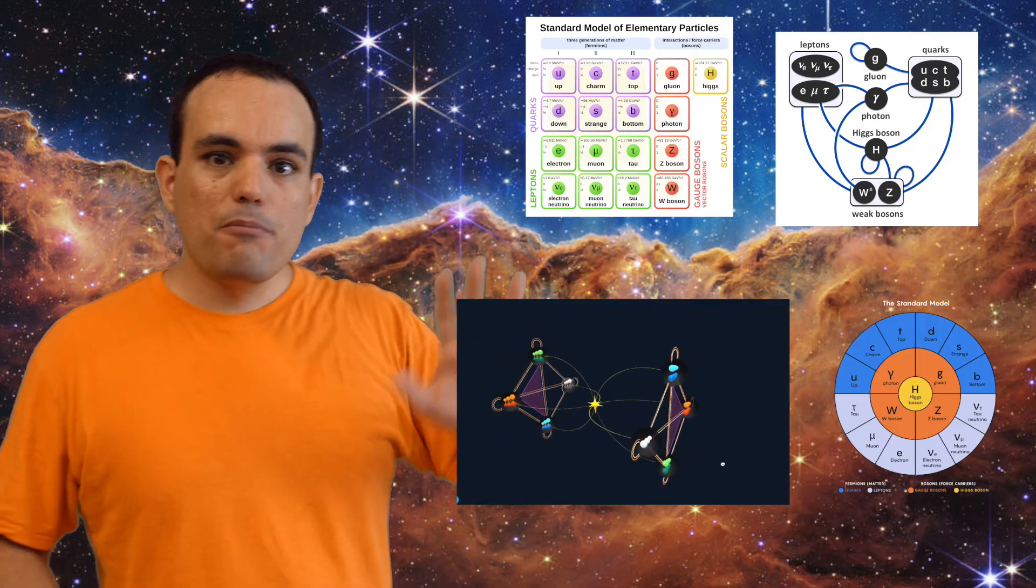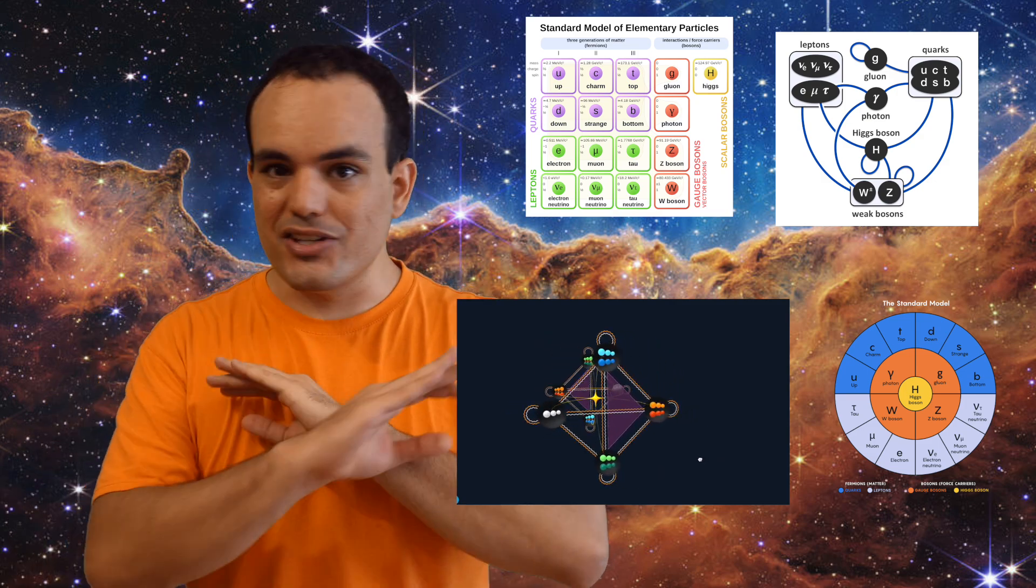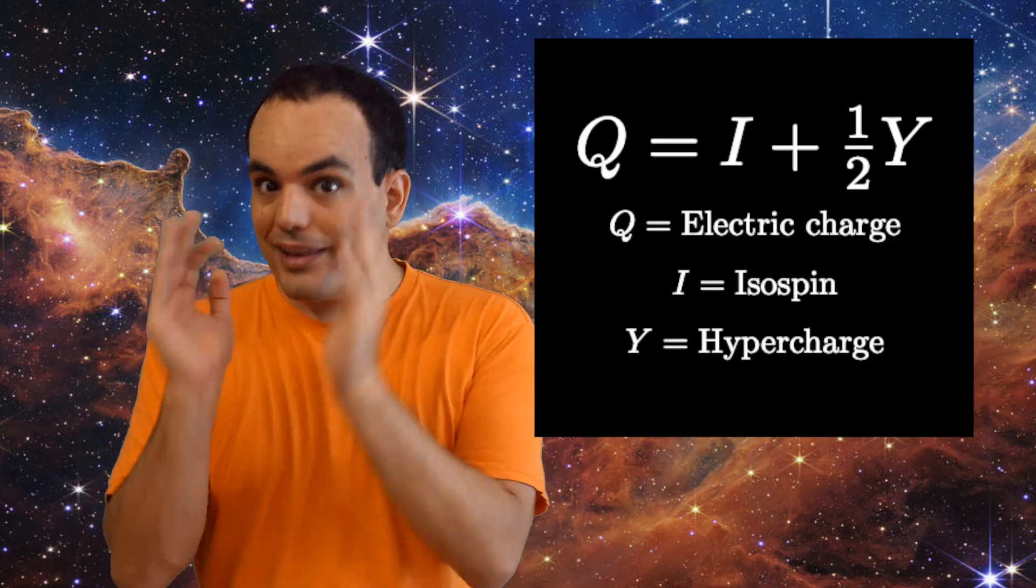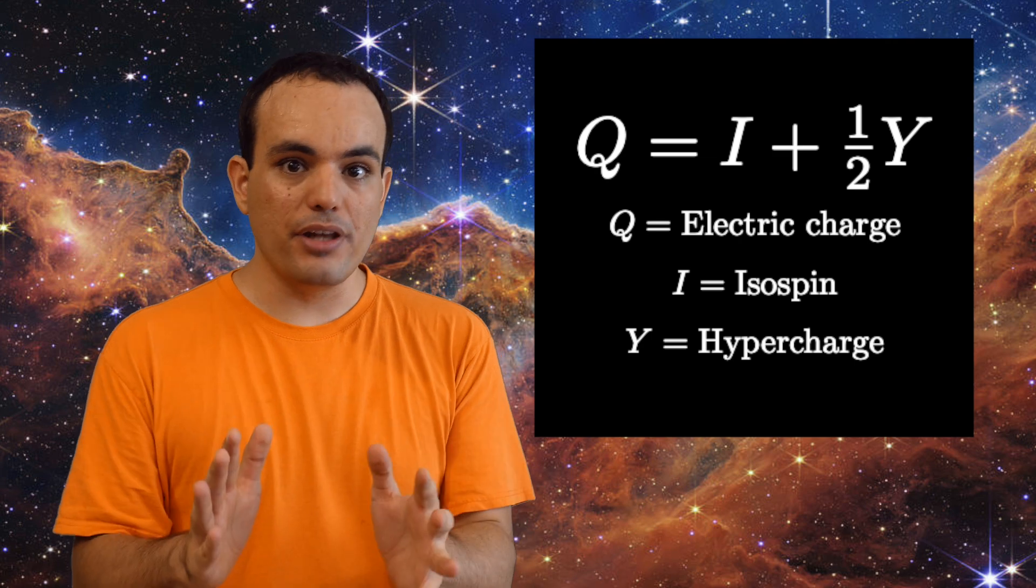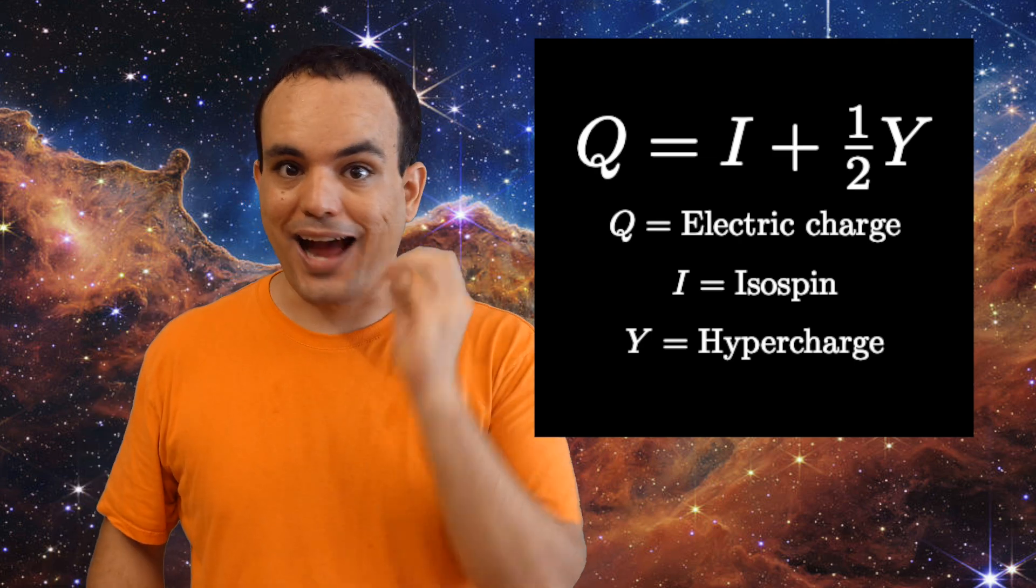us to the difference between my diagram and these other diagrams. Because electric charge is not who you think it is. Electric charge is in fact a combination of hypercharge and isospin.